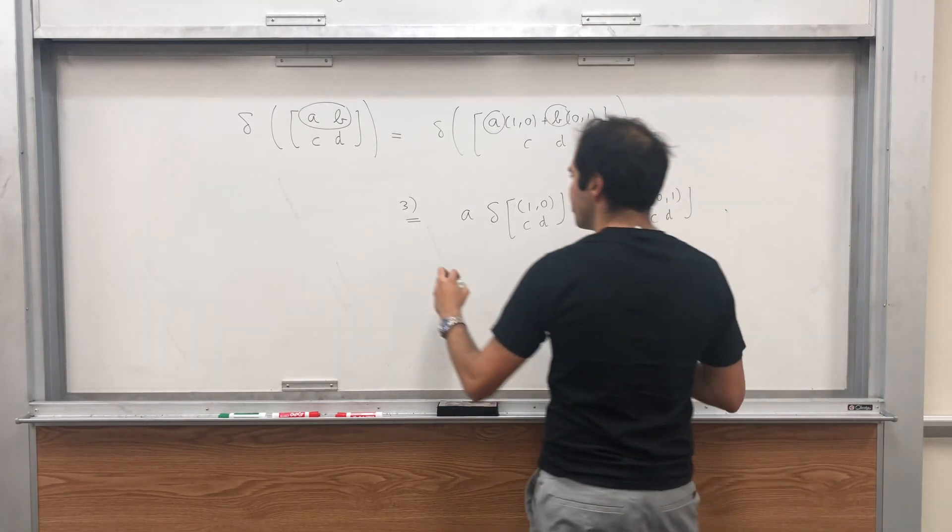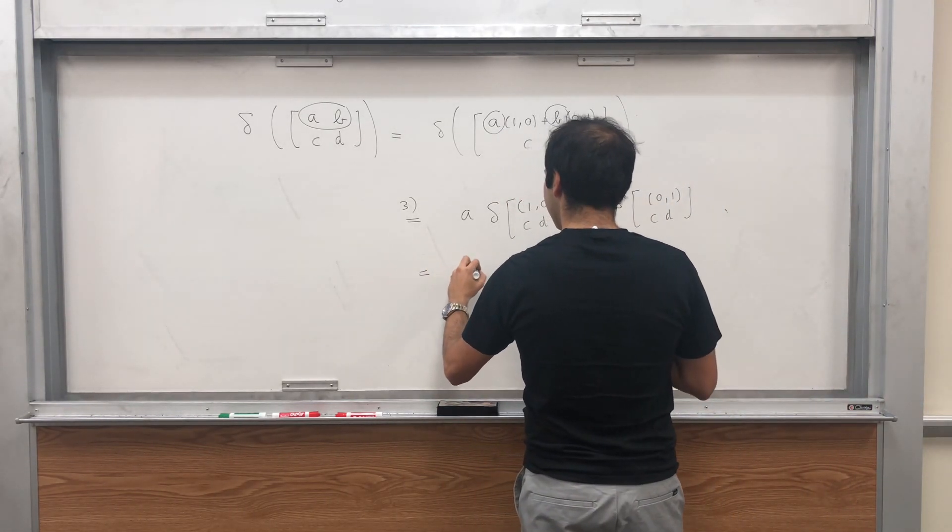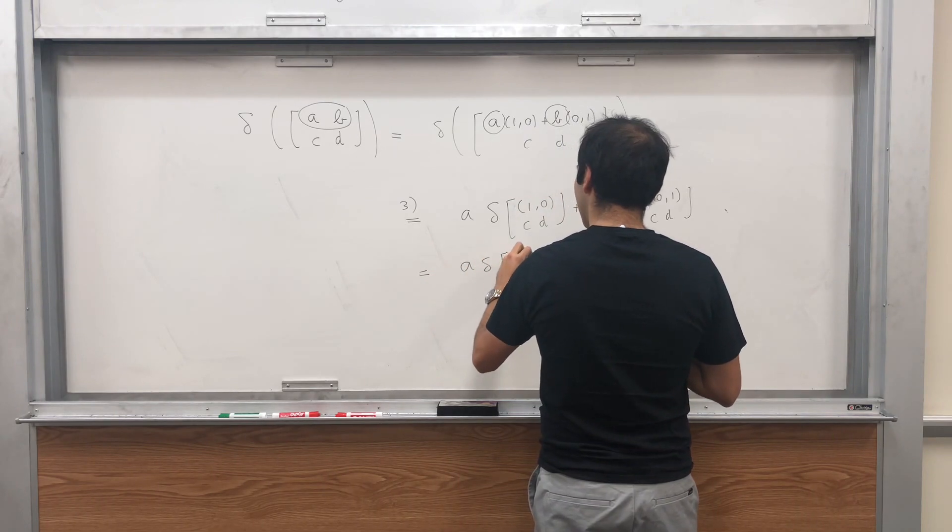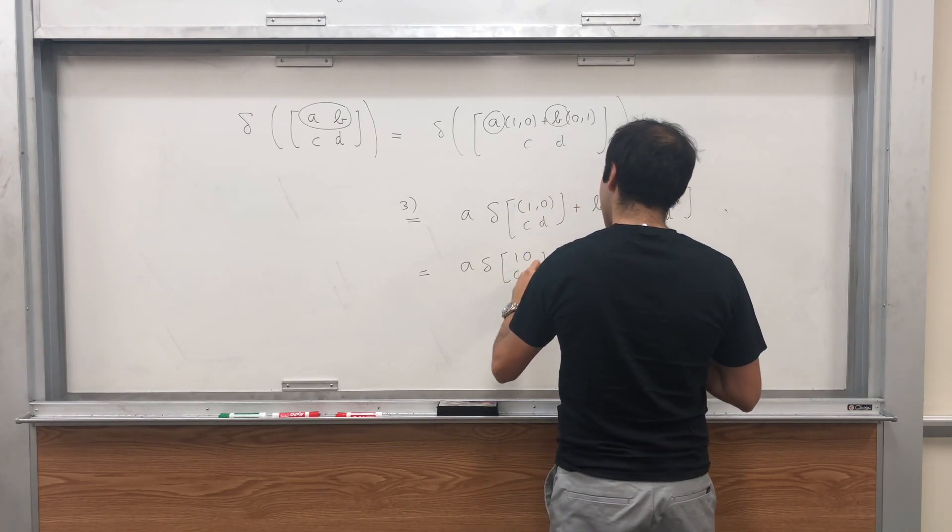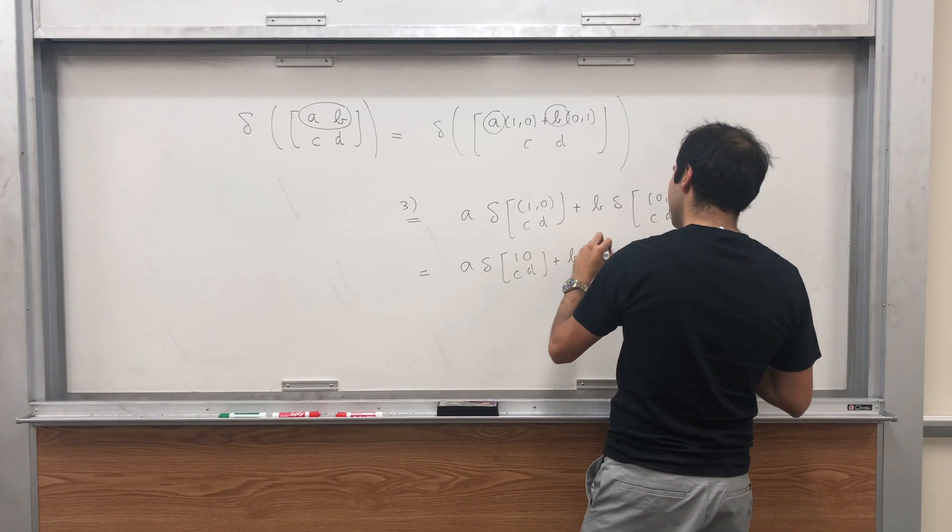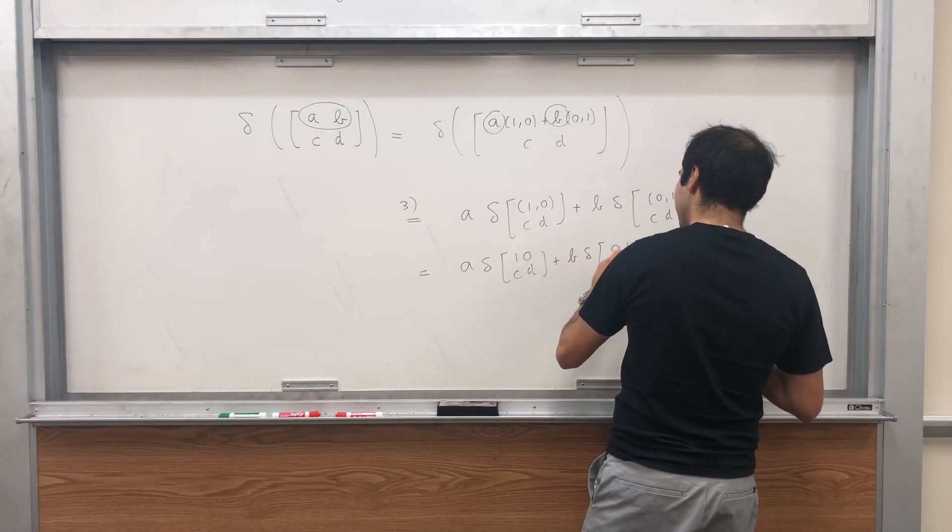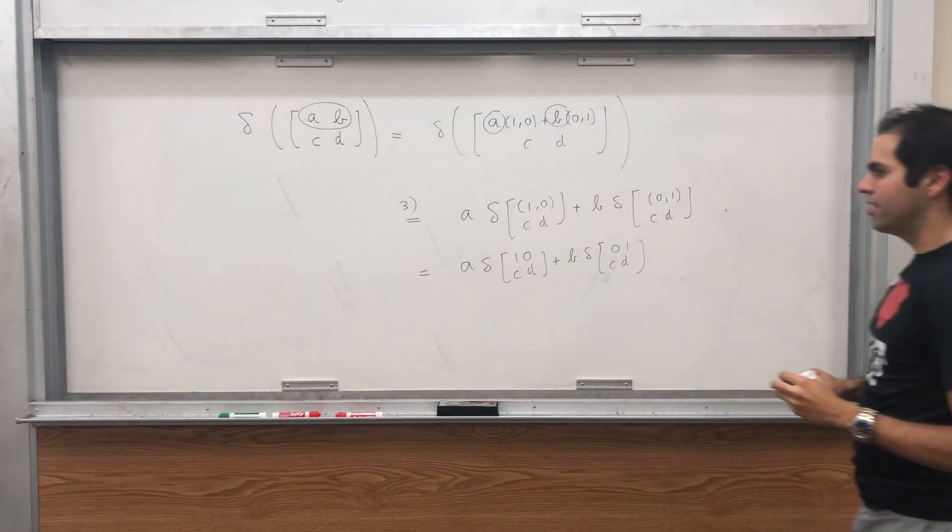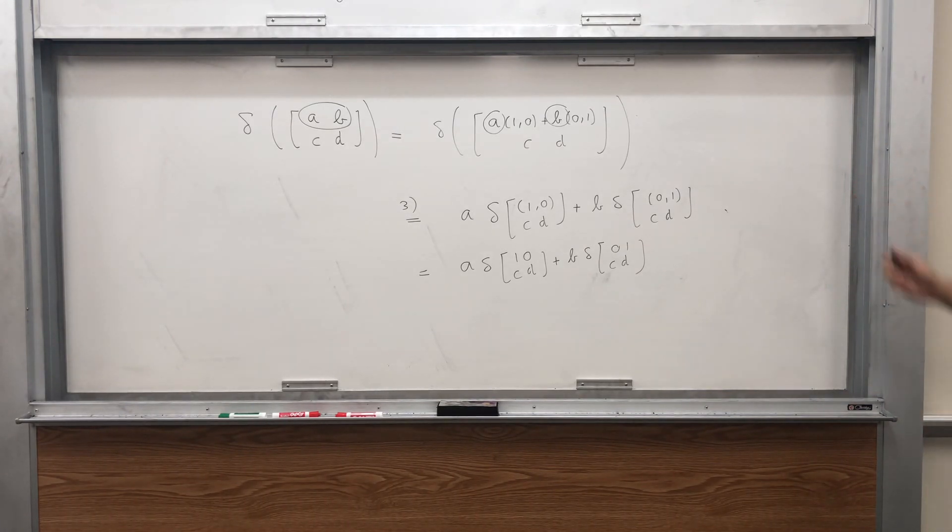But this just means, this notation just means A of delta 1, 0, CD plus B of delta 0, 1, CD. And well, we had so much fun with this, let's just do it again.